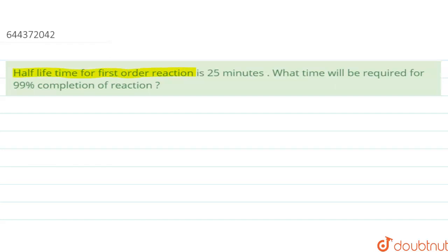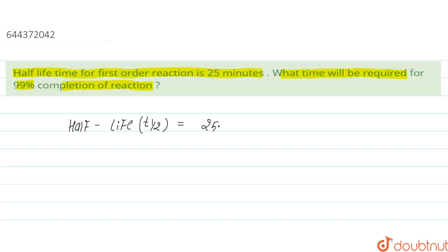Hello. In this question, we are given the half-life time for a first order reaction is 25 minutes. We have to find what time will be required for 99% completion of the reaction. The given data: half-life T-half equals 25 minutes.